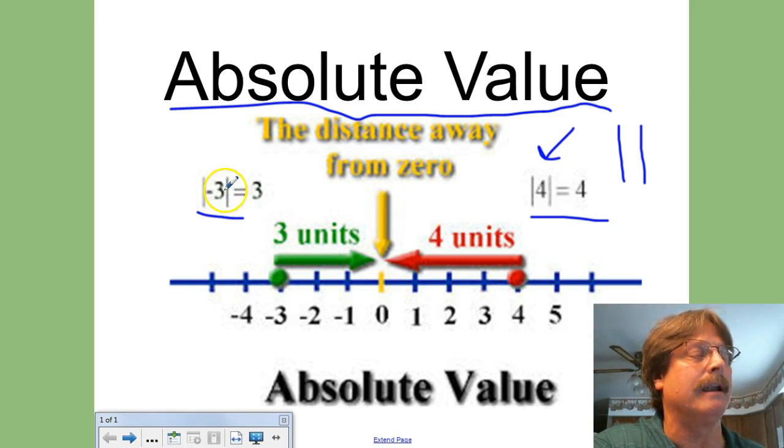So if we take a look here, our negative 3 is 3 units away, so there's 1, 2, 3. It's 3 units away from, I'm sorry, from 0. And then on this one the same thing, the positive 4 is 4 units away from 0.